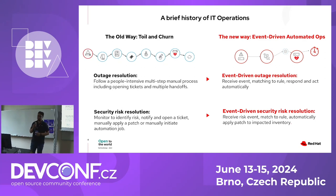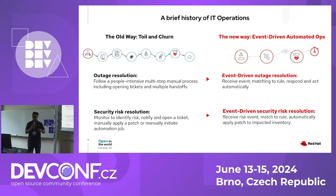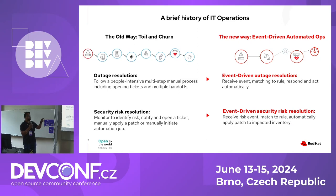Now imagine if there was some mechanism through which this could automatically be remediated on its own. There could be an event that says the disk space is more than 90%. This event is captured by Ansible, and then it automatically finds certain files which could be removed — log files older than 30 or 90 days, whatever policy you set. Think how much time that could save for an organization, for the team, or for the operations team. That's why we need event-driven automated ops everywhere.